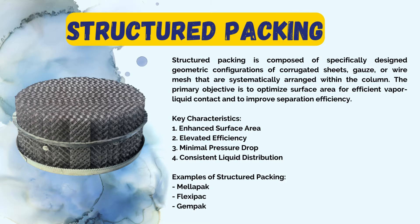Examples of structured packing include: first, Mellapak, which consists of corrugated metal sheets arranged in a specific configuration. Second, Flexipac, which utilizes a flexible textured surface to enhance mass transfer. Third, Gempak, which features a structured arrangement of mesh. These are the three main examples of structured packing.